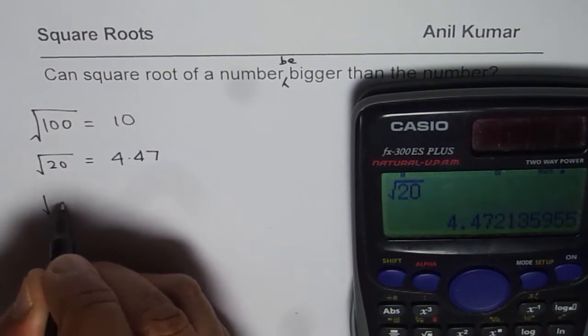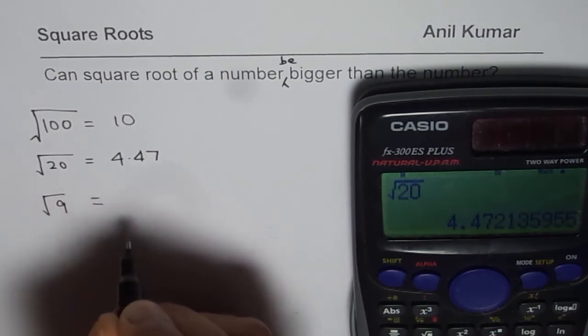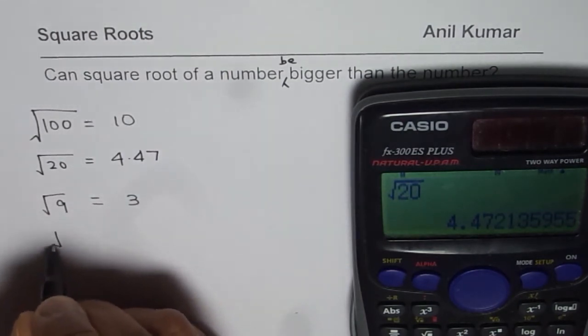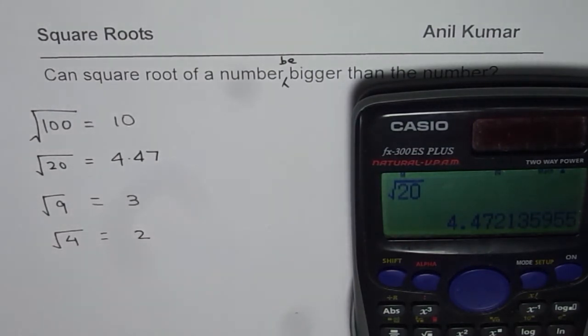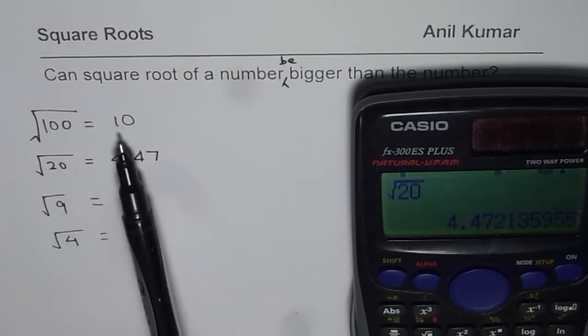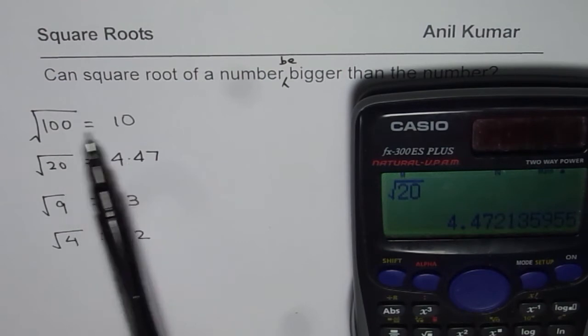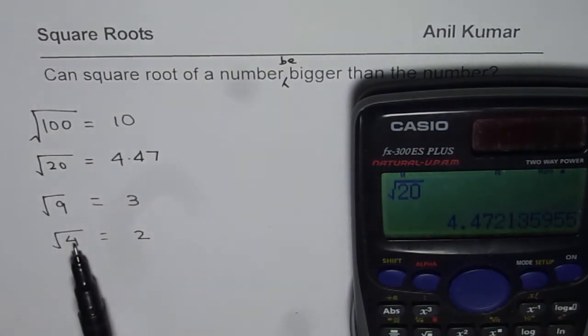Let's try some other numbers. This is square root of 9. You know, square root of 9 is 3. Square root of 4 which is 2, which is smaller. So what do we see? We see that the square root of number is much smaller than the number itself. But as the number decreases,